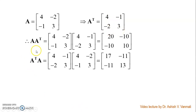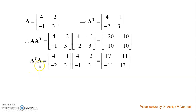Correspondingly we can find A·A transpose. Substituting the values of A and A transpose and multiplying these two matrices, we get A·A transpose as: 20, -10, -10, 10. Similarly, finding A transpose·A, substituting and multiplying, we get: 17, -11, -11, 13. So clearly A·A transpose is not the same as A transpose·A.